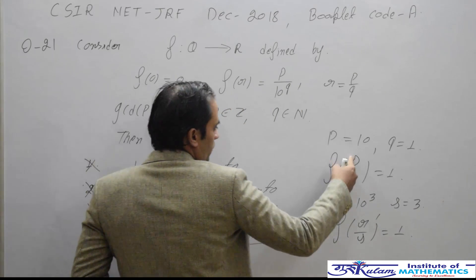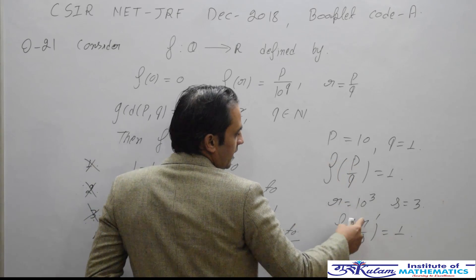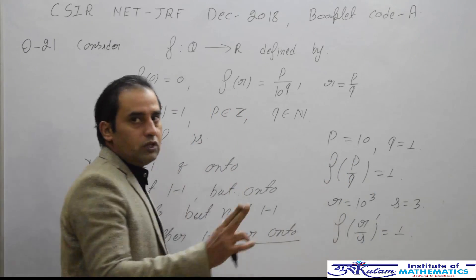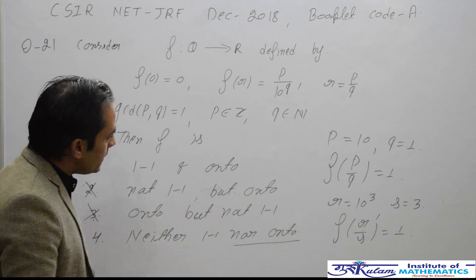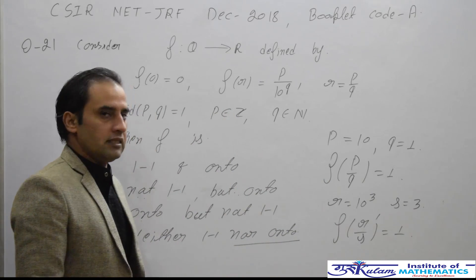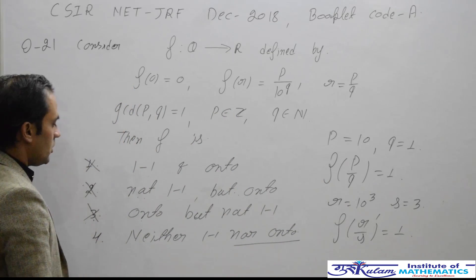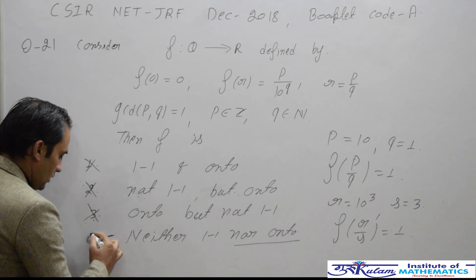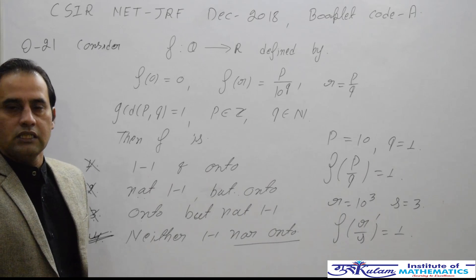So p/q which is 10/1 and r/s which is 10^3/3 are two distinct elements, but the images of these two elements are the same. That is, this function is not one-to-one. Hence, the given function is neither one-to-one nor onto, and the answer is option 4.